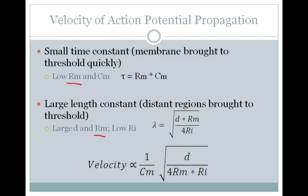For the length constant, you want membrane resistance to be high. It turns out, in the total velocity equation, you want membrane resistance to be low to get a higher velocity, which means that your time constant is winning out. For everything else, you want a large axon diameter, low internal resistance, and low capacitance to get your highest velocity.